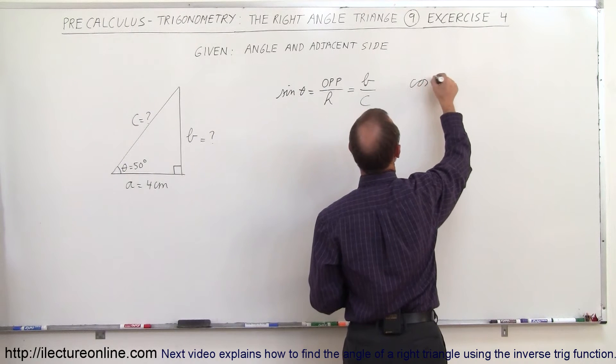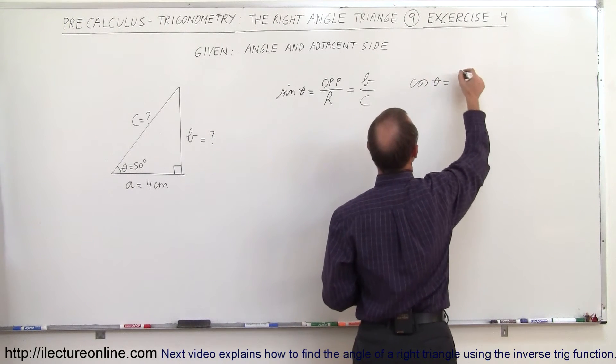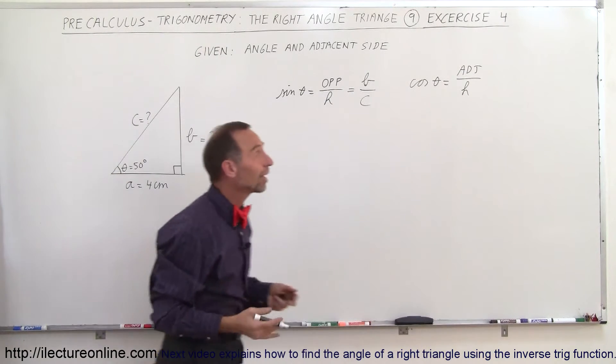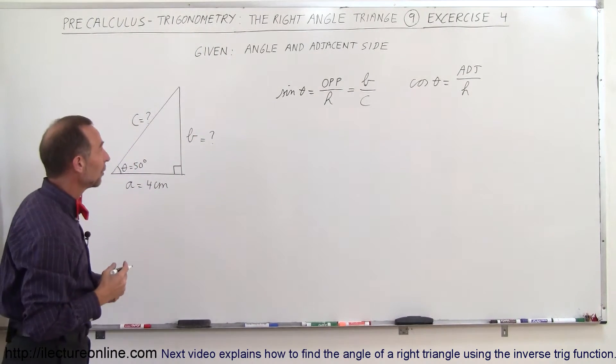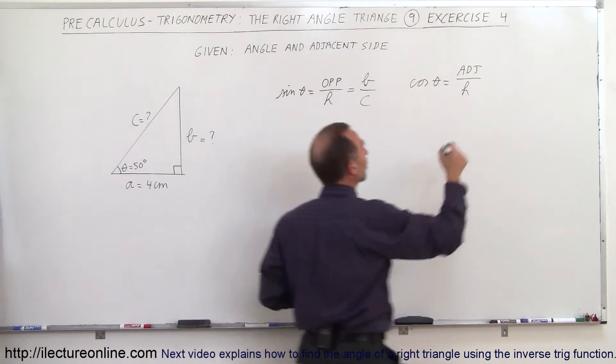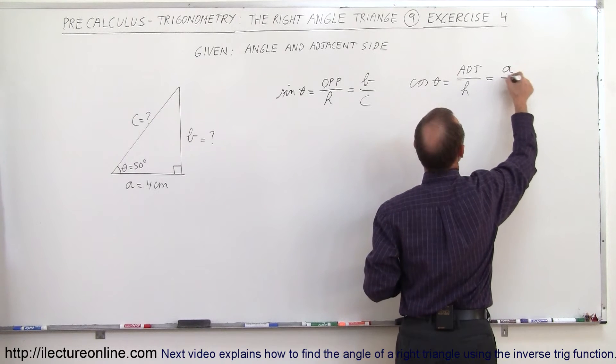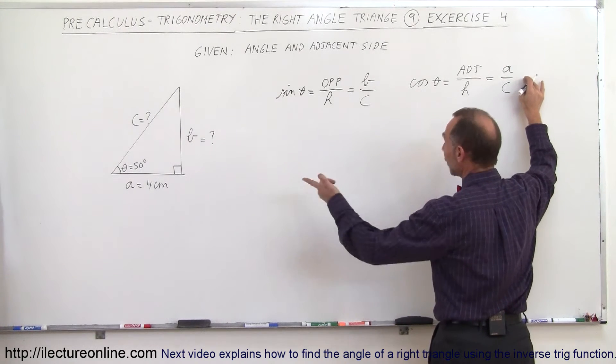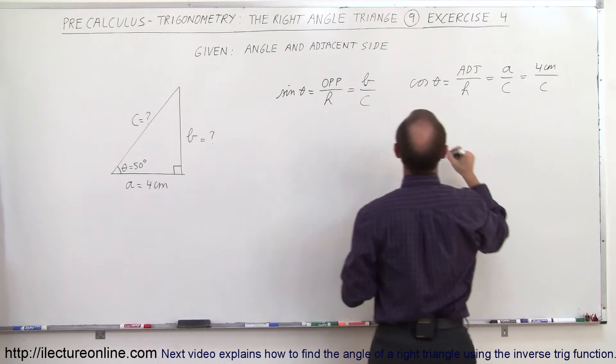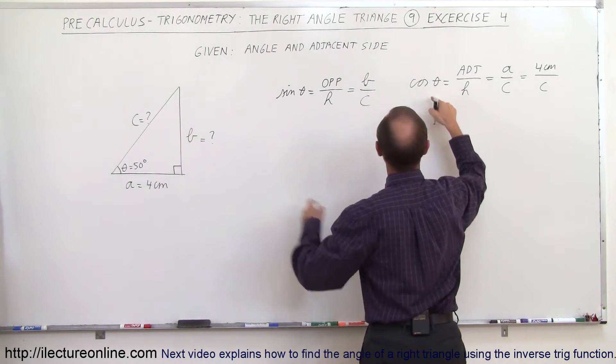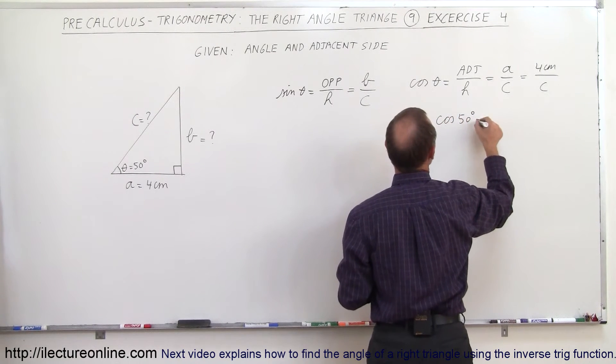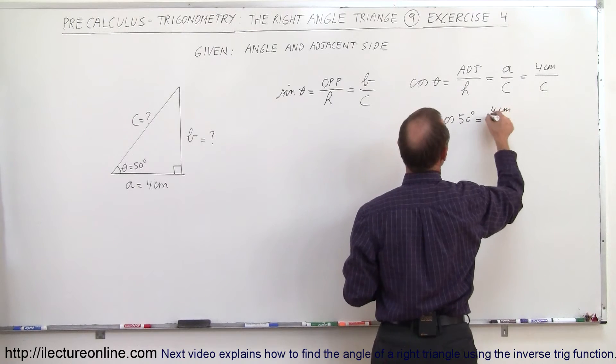So now we have the cosine of theta and by definition, that's equal to the adjacent side divided by the hypotenuse, the ratio of the length of the adjacent side by the length of the hypotenuse. Now when I plug in what these are, the adjacent side is A, hypotenuse is C. So this is A divided by C and A, we know what that is. This is equal to 4 centimeters divided by C. Now I have, and I know what the angle is, so I can now write this as the cosine of 50 degrees is equal to 4 centimeters divided by C.